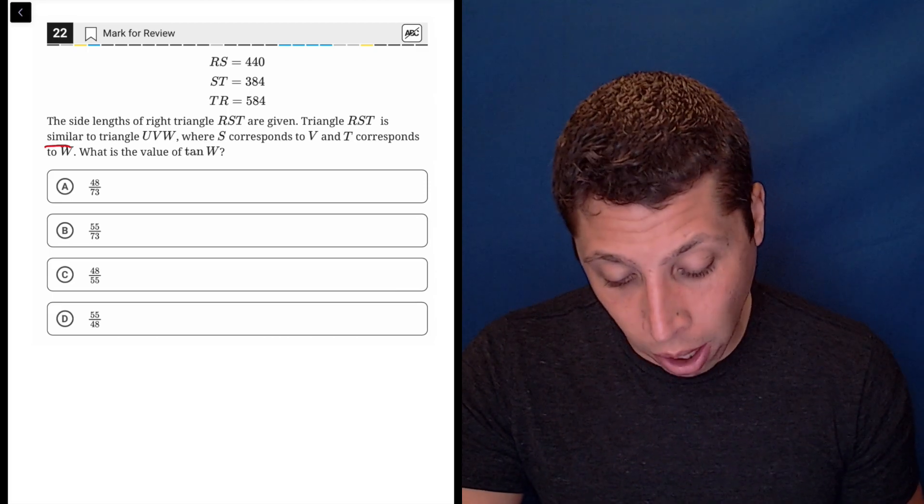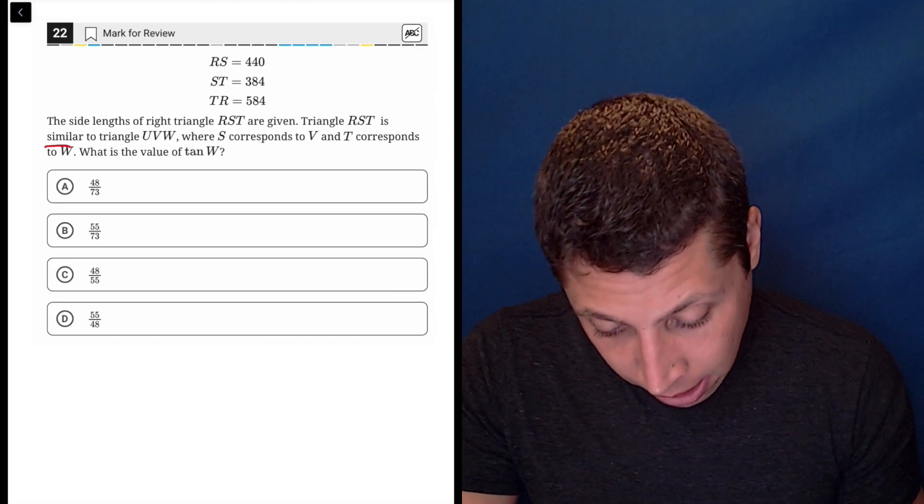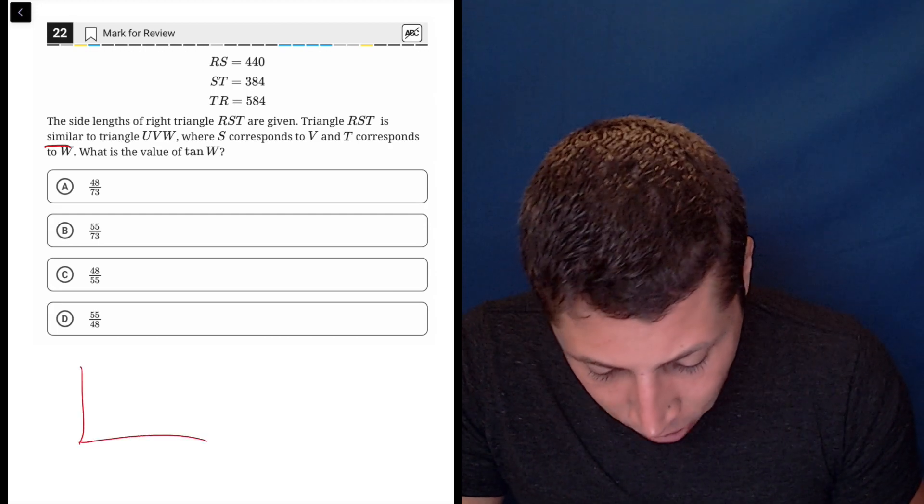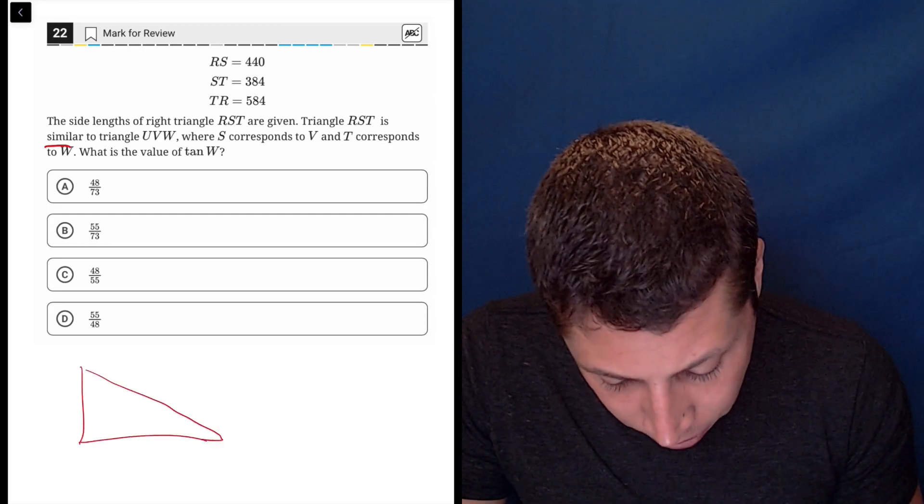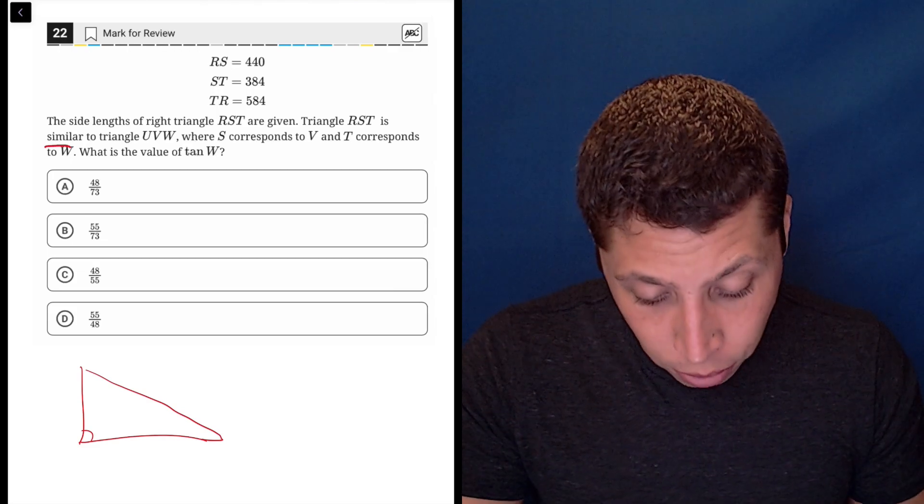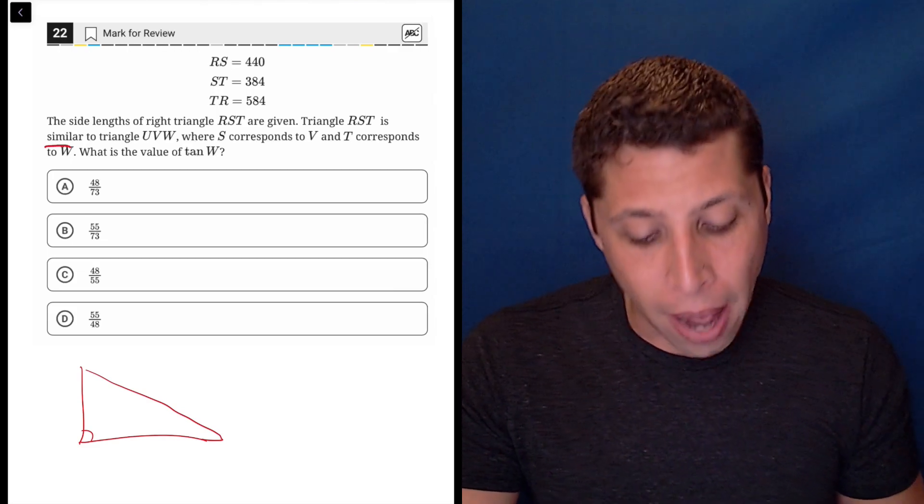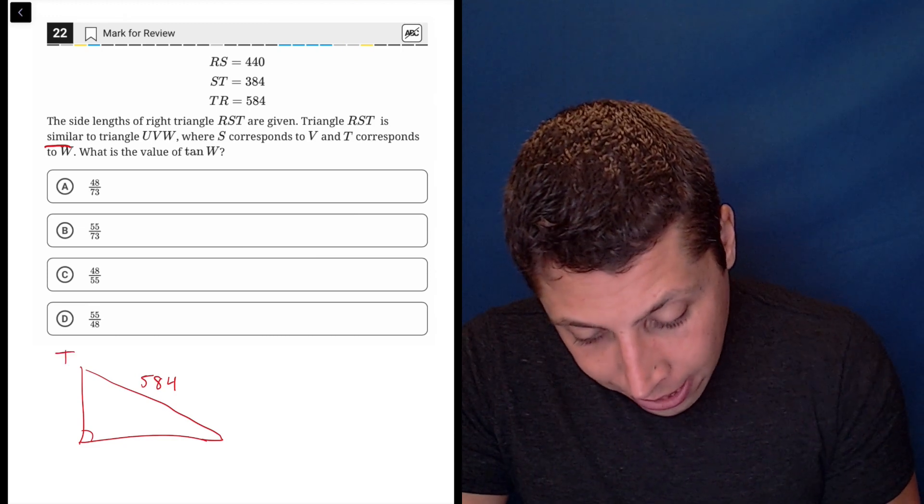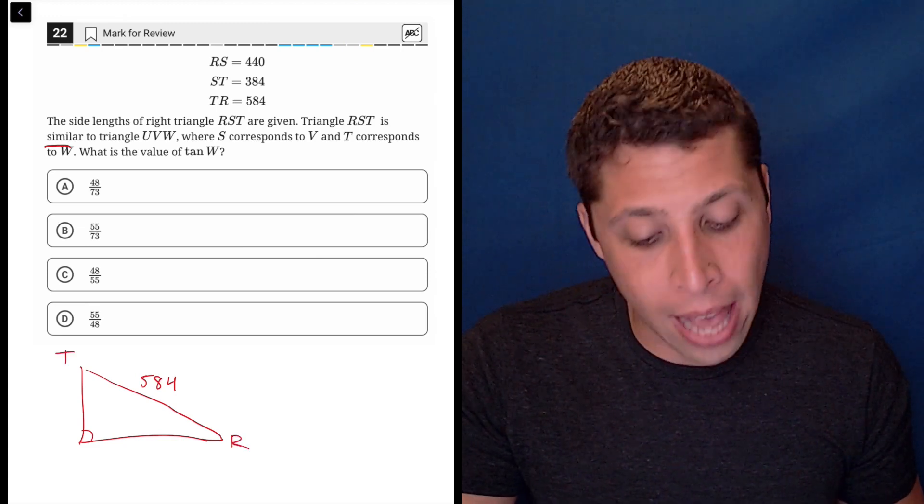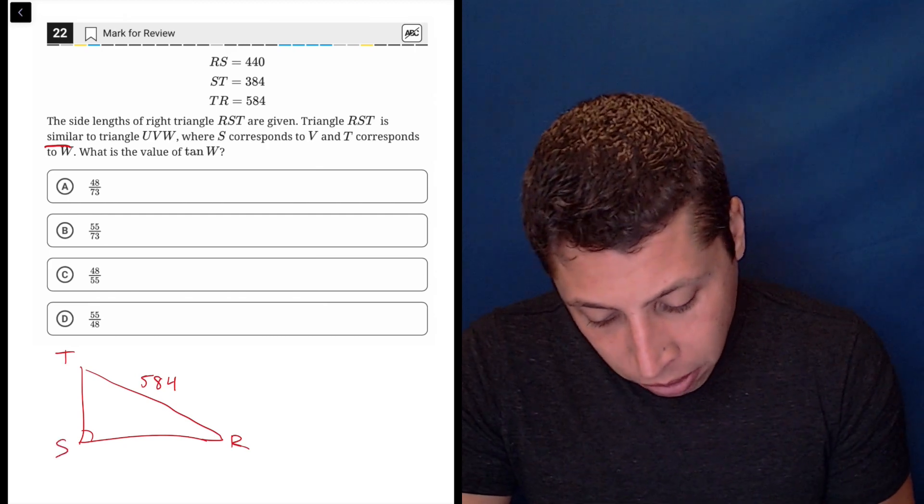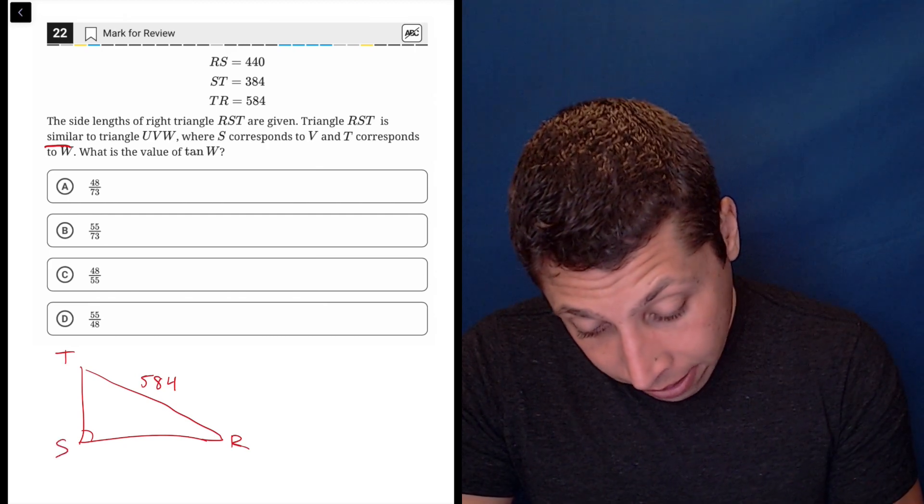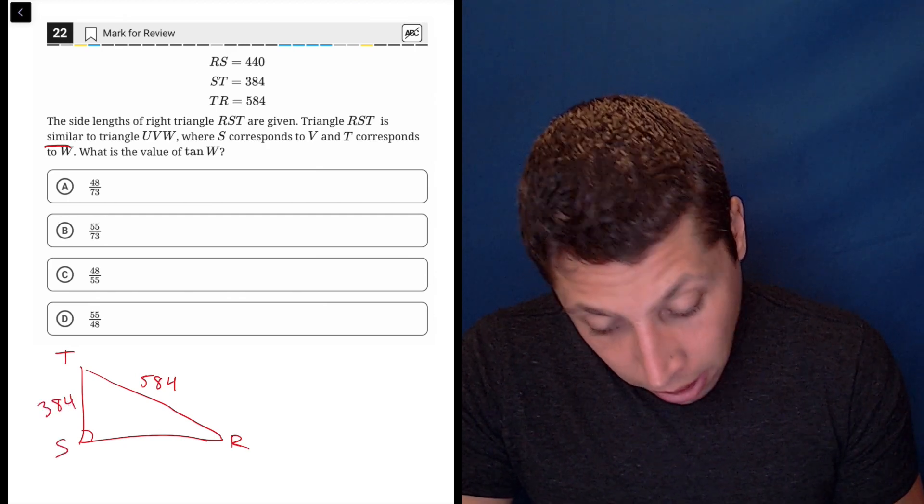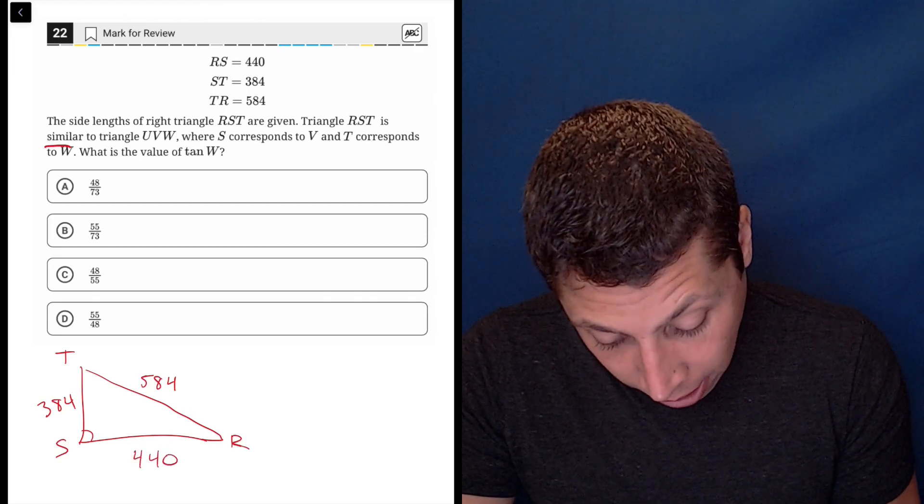I would definitely try to draw triangle RST. If we want to follow the rightness of the triangle, the longest side is going to be that hypotenuse. So that's going to be the 584. So we can do T and R to give us that and then we can fill in the other two. So this means this is S and this is going to be 384 and this is going to be 440.